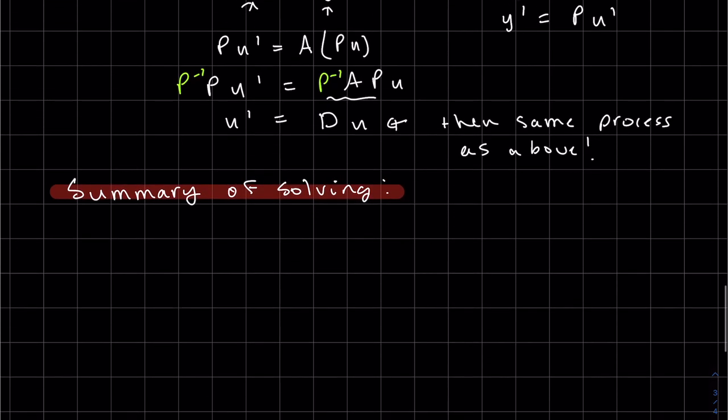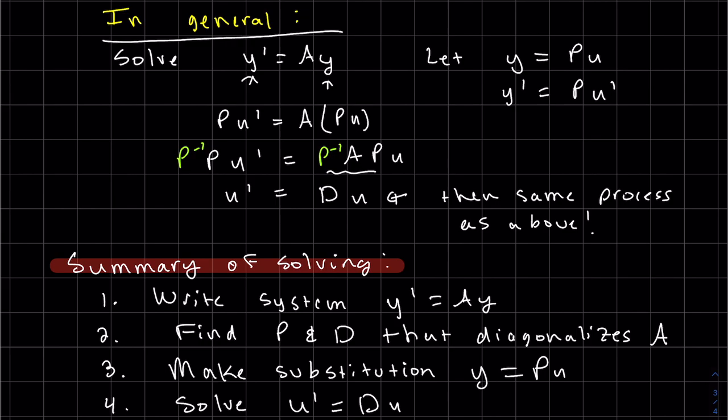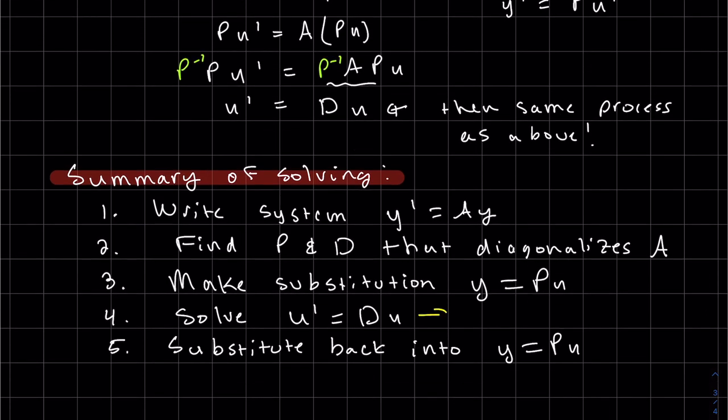So here's the summary with the steps. We write the system y prime equals A y. Then you basically find P and D that diagonalizes A. Once you make the substitution, you solve this. And then once you've solved for u, you plug it back in here and there's your solution y. Because you solve this and our solution is u, which you plug back in and then our solution is y.